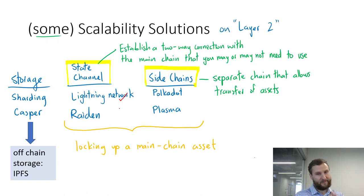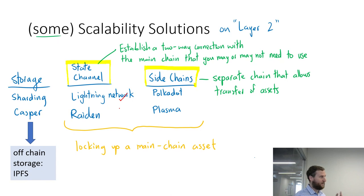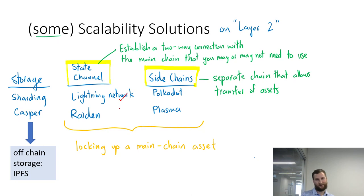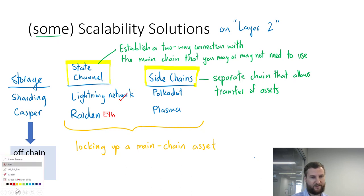The marketing pitch: you open a channel, put in say $100, go shopping around town using Lightning because it's fast with no confirmation wait, and at the end of the week settle back on the main chain — a two-way peg. It has some uptake and a lot of promise, but needs more users. Raiden is the same type of thing for ethereum. Sidechains are different — they're a completely separate chain.